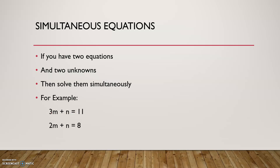We have m and n as our two unknowns. For both equations we have m and n, which means we have two variables m and n and both of them are unknowns. Hence we're going to solve them simultaneously.